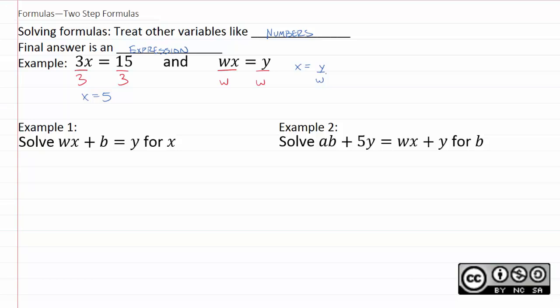If you notice, we do the exact same thing here for the exact same reason as before. The only difference is that we don't know what the letters are, so we just have to leave it as y over w. But we handle them the exact same way we would handle them if numbers were there.